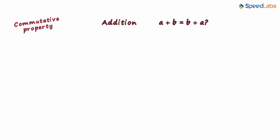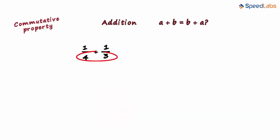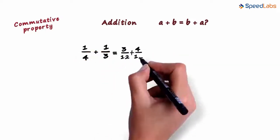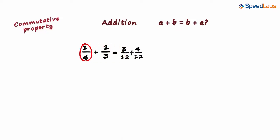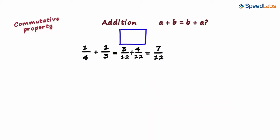Consider addition of two random rational numbers, 1 by 4 plus 1 by 3. The LCM of 4 and 3 is 12. So this can be written as 3 by 12 plus 4 by 12. This rational number is the equivalent of this one and this rational number is the equivalent of this one. And adding both numbers, we get 7 by 12. This was a plus b.